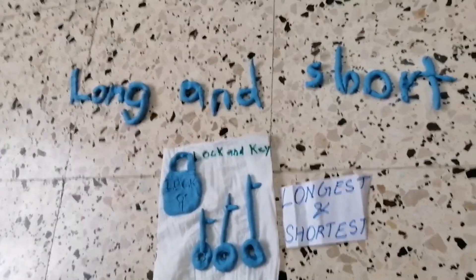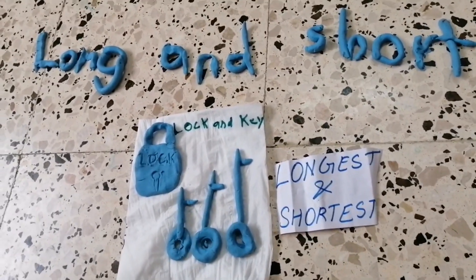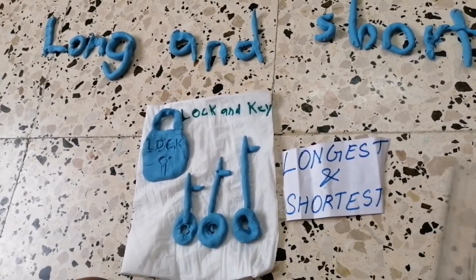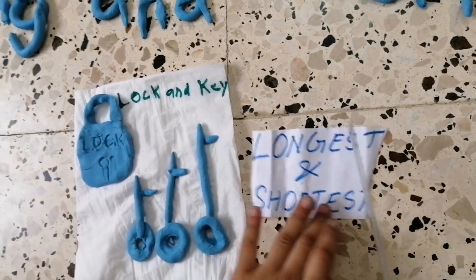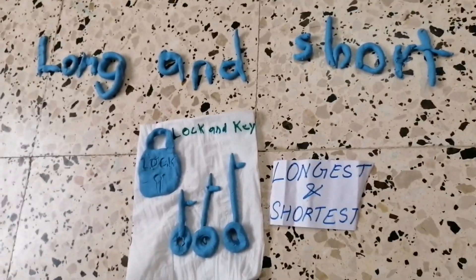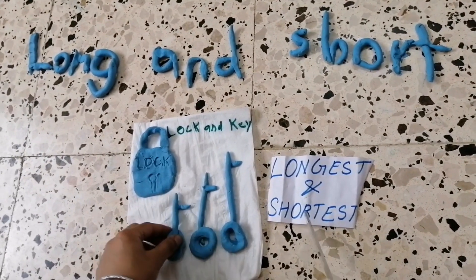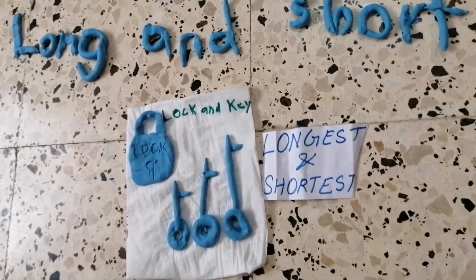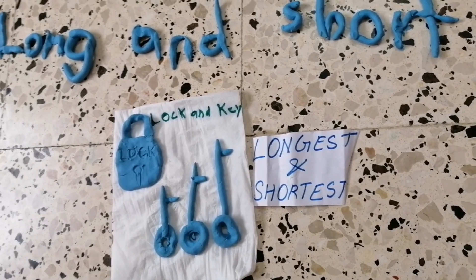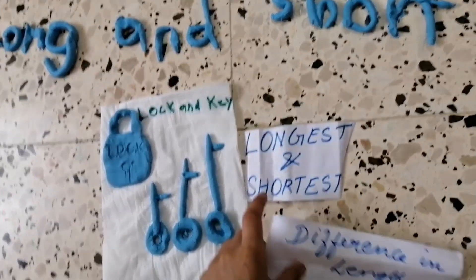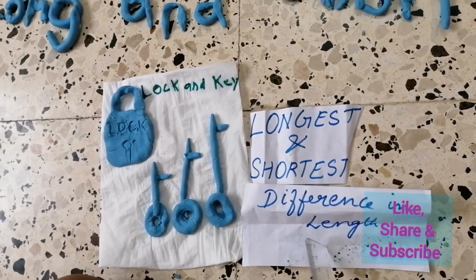Next one is lock and key. We have three keys. Which is the longest one? Yes, this is the longest one. Which is the shortest one? Yes, this is the shortest one. What do you understand? Again, difference in length.